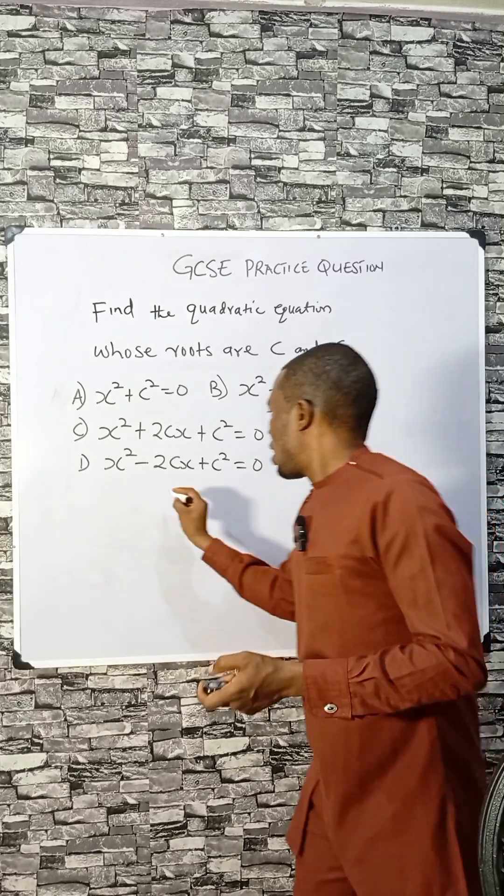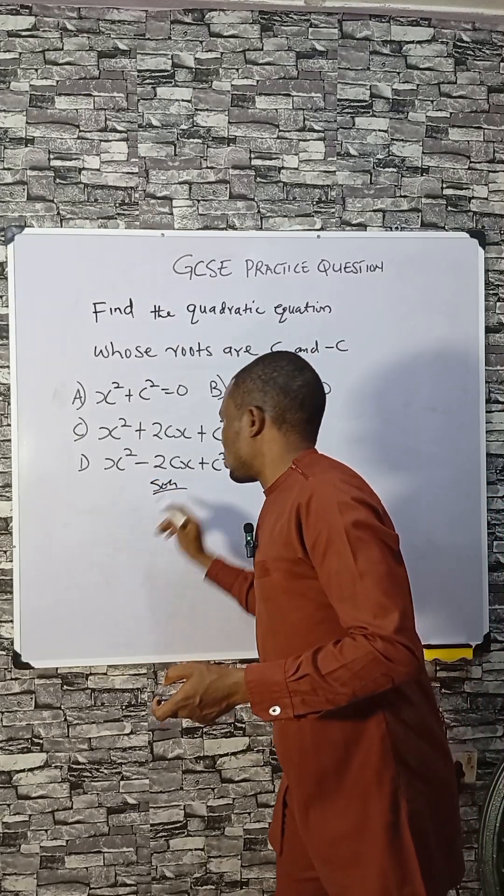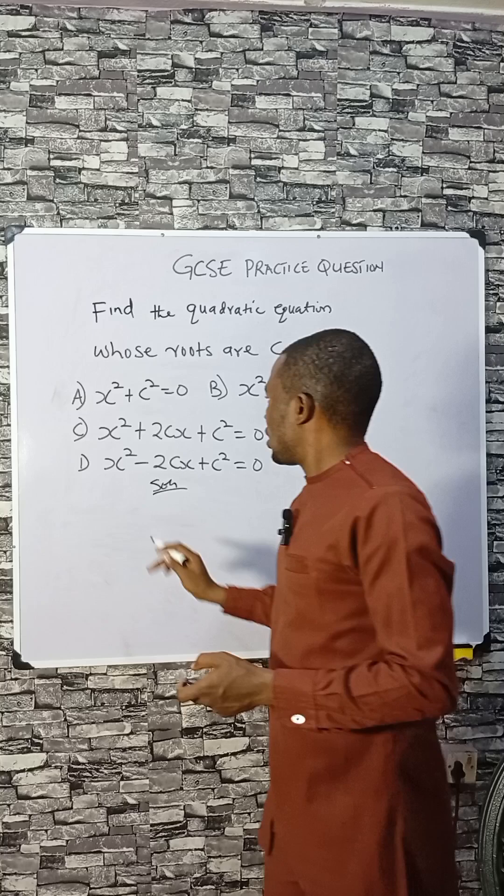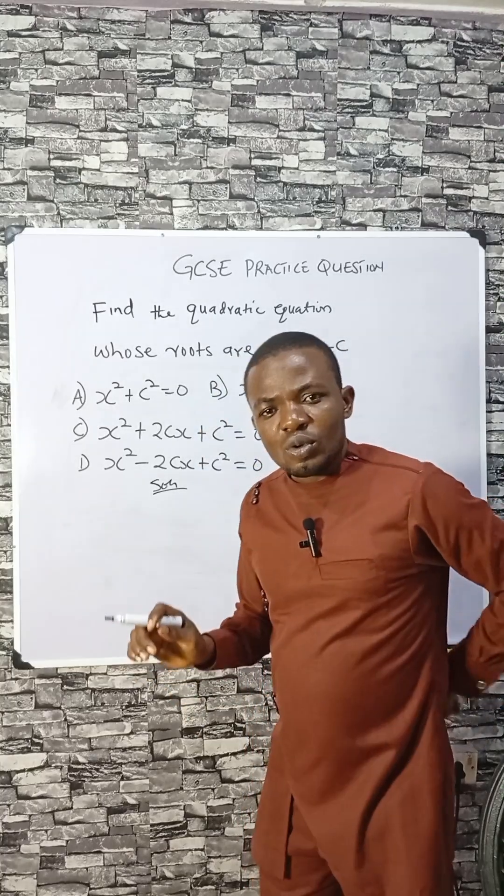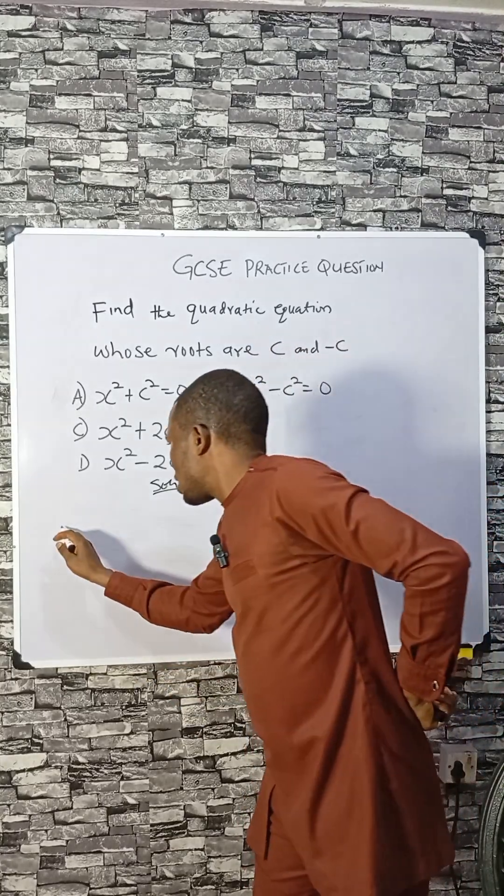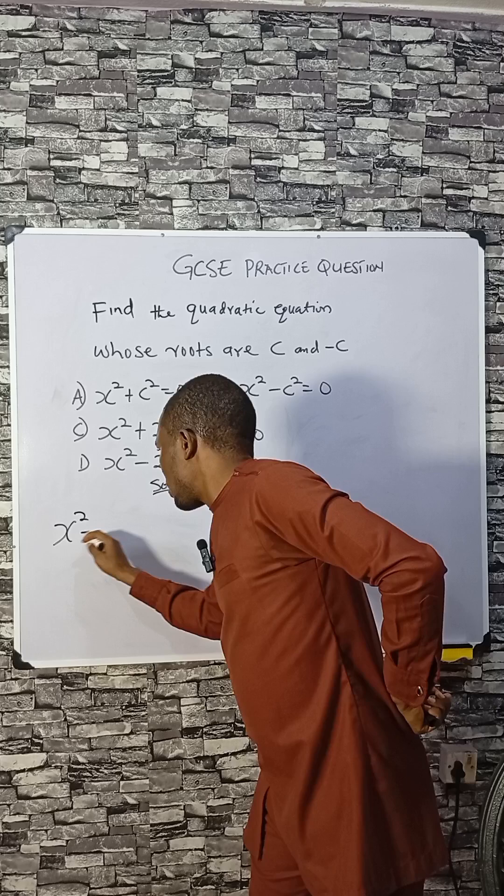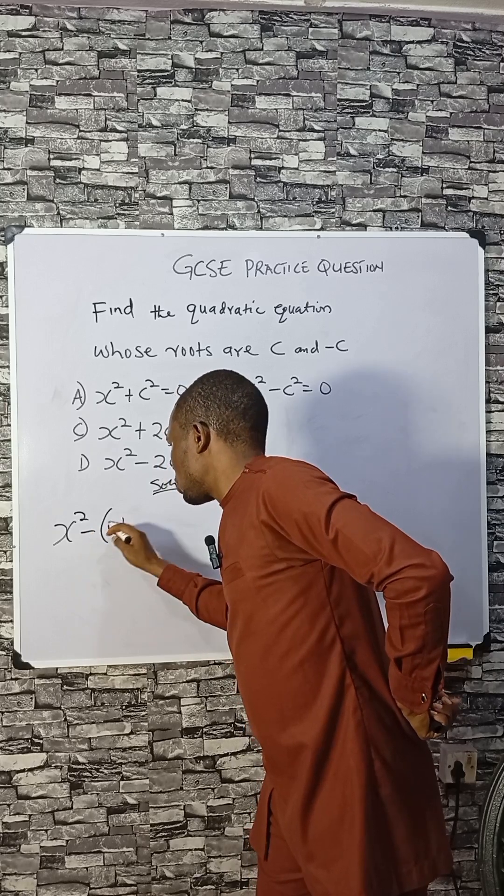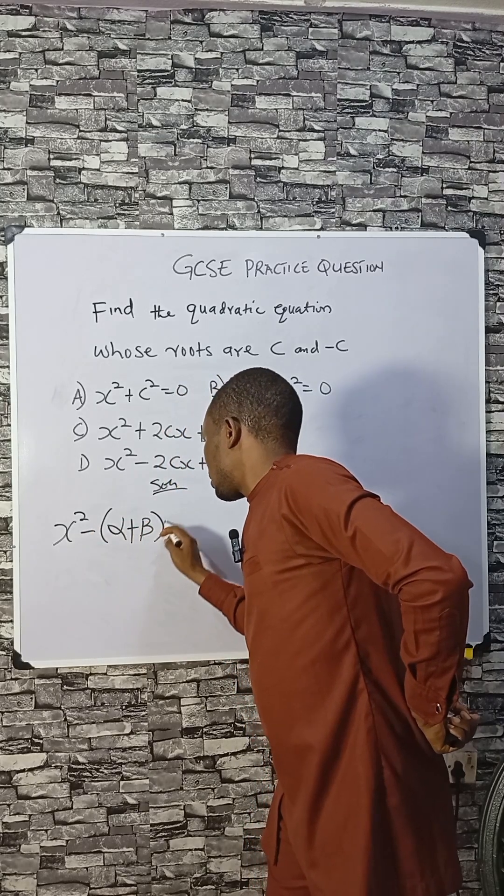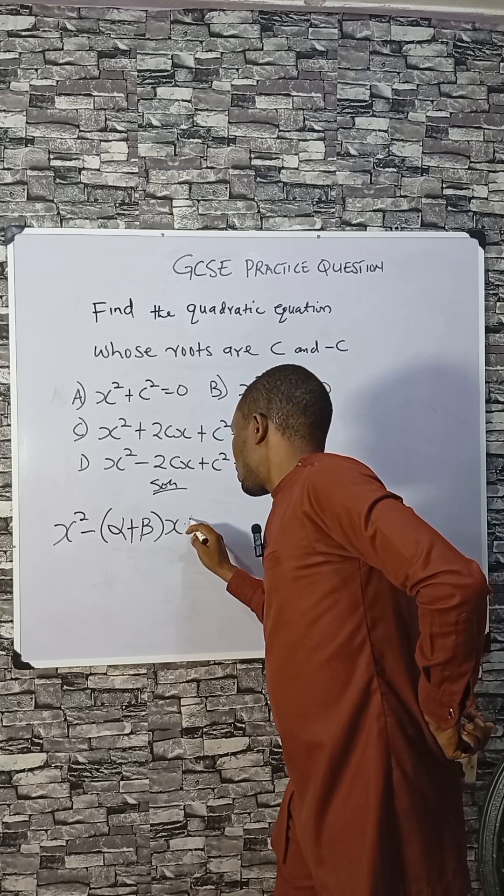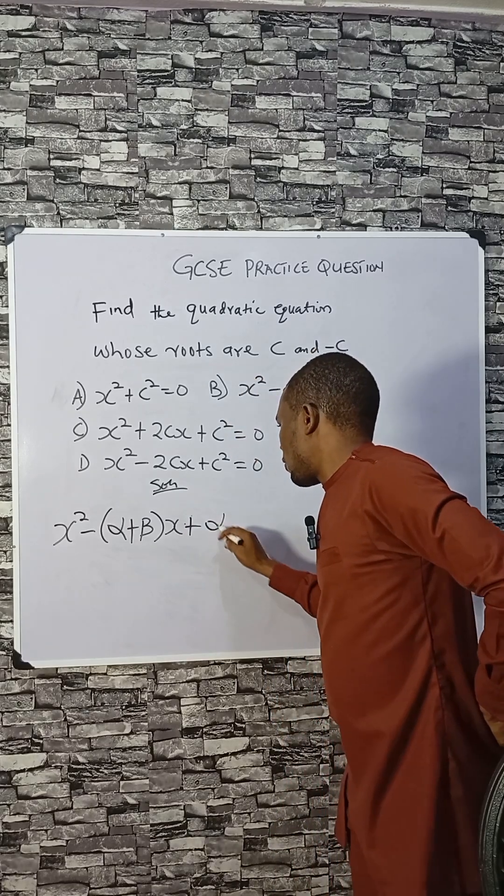Now let's take our time to solve this. If you find this interesting after watching, please like and share. Any given quadratic equation is given by this: x squared minus sum of root, which is alpha plus beta, times x plus product of root, which is alpha